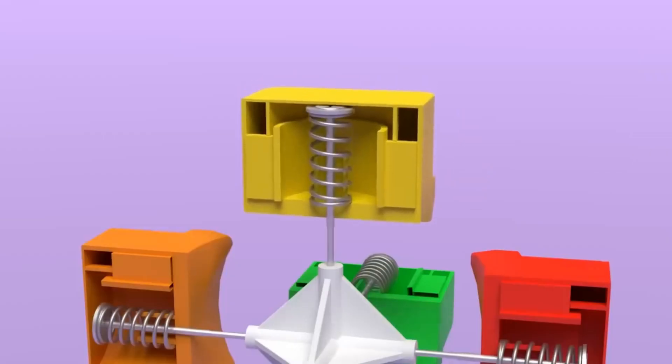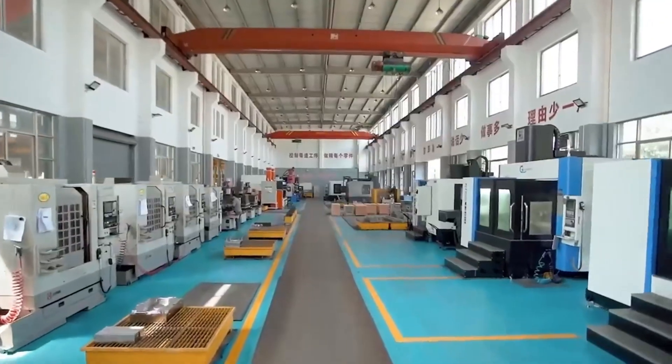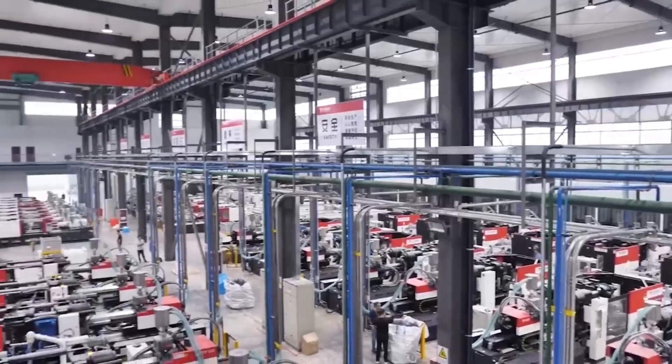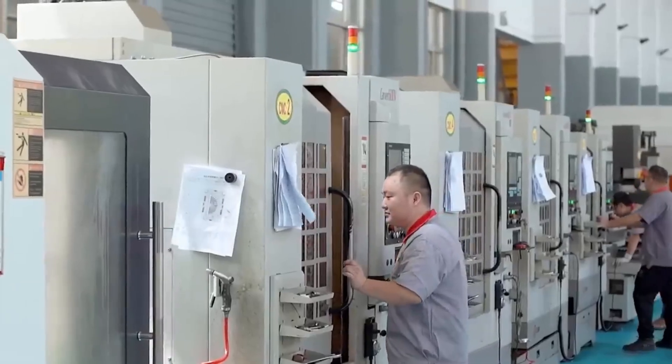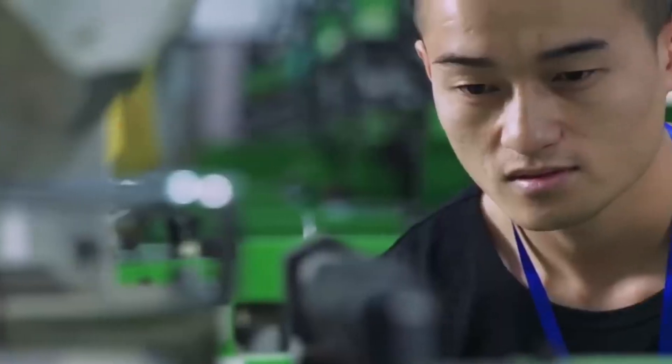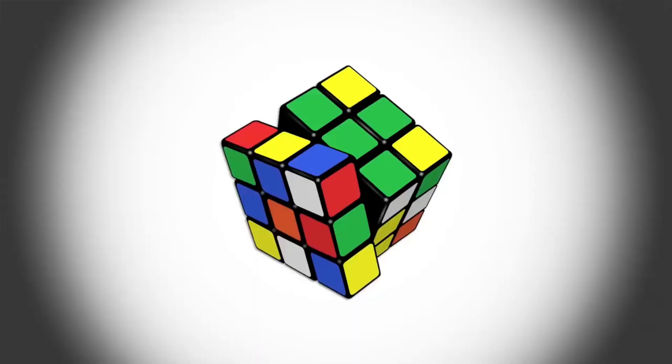After finishing the three-dimensional design phase, we enter the production area, where a sophisticated process known as injection molding is used to bring the cube parts to life. This process is essential in the manufacture of the Rubik's Cube, as it guarantees the precision and quality of each component.